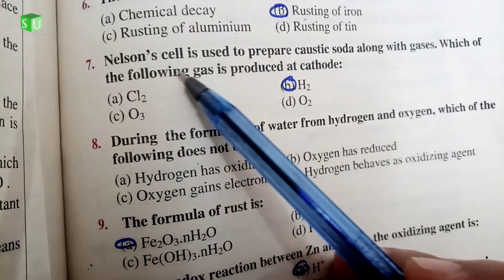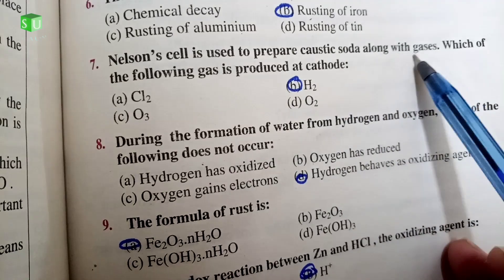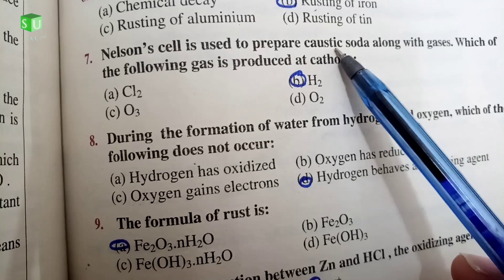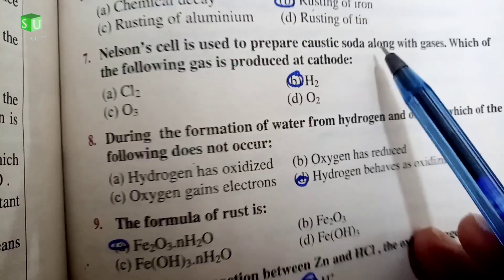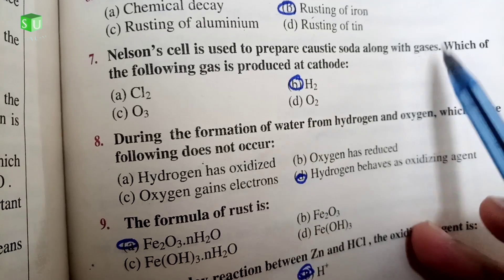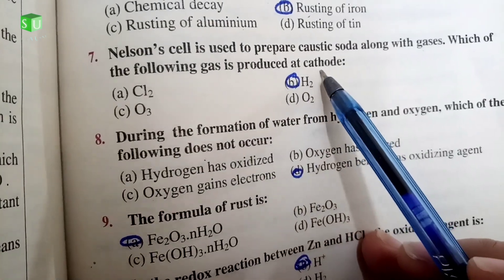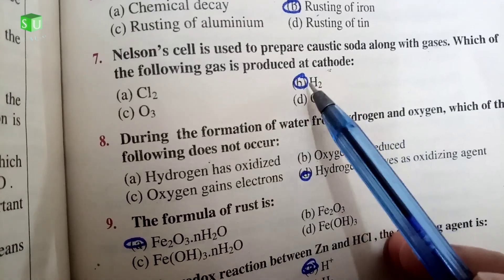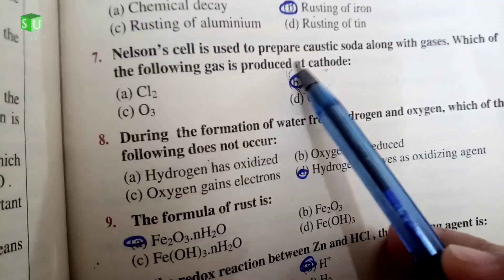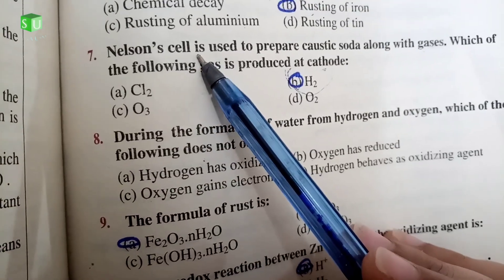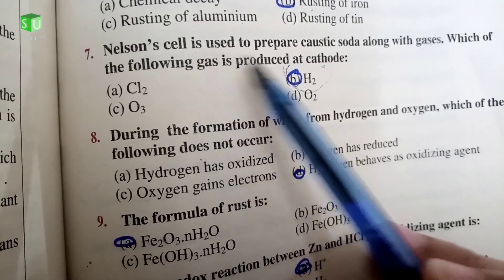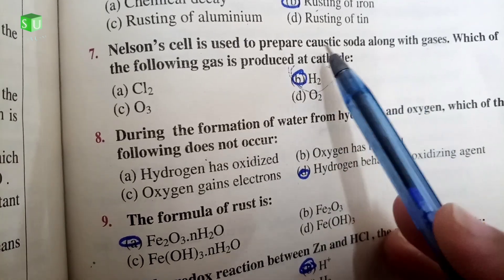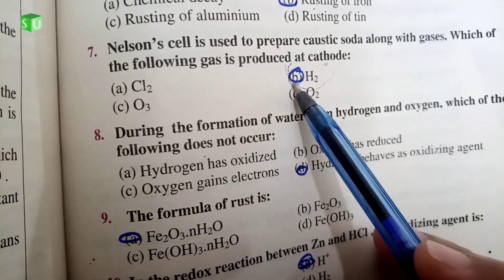Number 7: Nelson cell is used to prepare caustic soda along with gases. Which of the following gases is produced at cathode? Hydrogen gas is produced at cathode. Nelson cell detail is given in your book. At cathode hydrogen gas is produced, at anode other gas is released. The main product is caustic soda. So correct option is B.